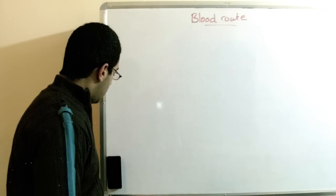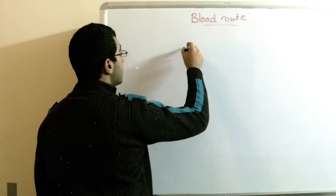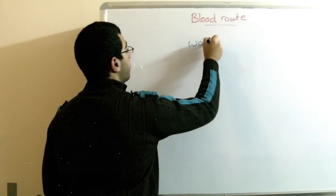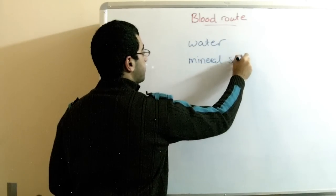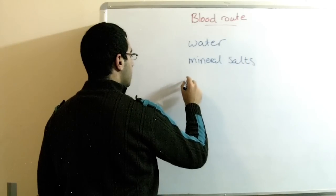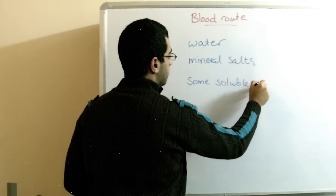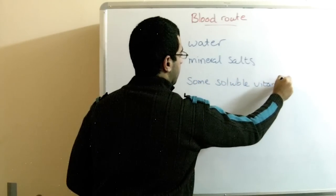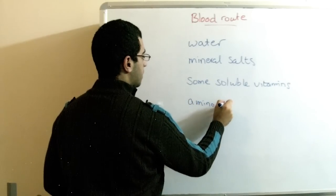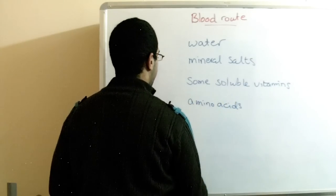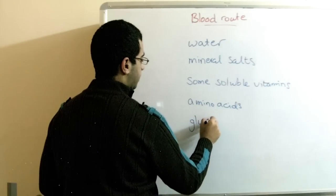The blood route. In the blood route there are five kinds of food that move through it. We have water, we have mineral salts, we have some soluble vitamins, amino acids which resulted from the hydrolysis, and glucose.